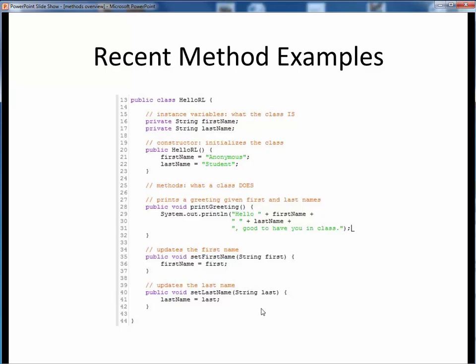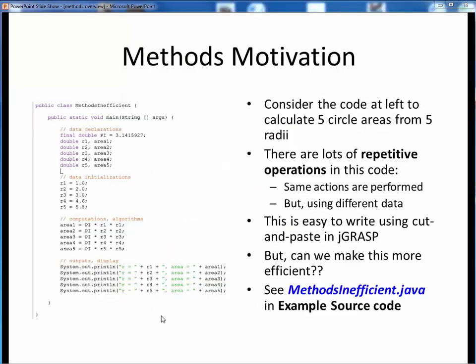To better understand the motivation for methods, take a look at the sample code on the left. This example computes and prints the area of five different circles, given the five different radii. It's very easy to write this code using some simple cut and paste, but it's also very inefficient because of all the repetitive operations. Here we're performing the same operations over and over, just with different data. Can we make this more efficient? Please take a moment now to pause this video and view the short code walkthrough for methodsinefficient.java. Open up this file in JGrasp so you can follow along. You'll find this example in the example source code module on Canvas.